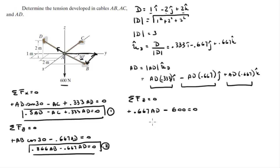So you solve for AD and you get positive 600 divided by 0.667, which comes out to be exactly 900 newtons.